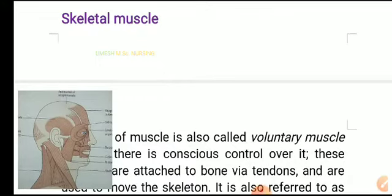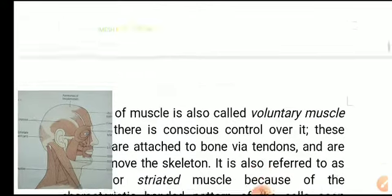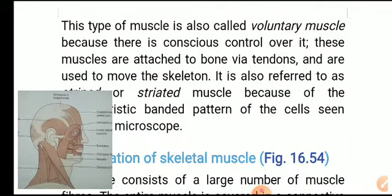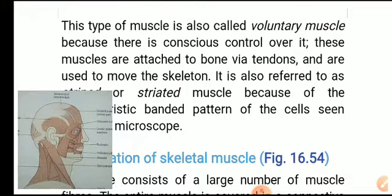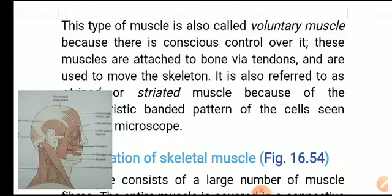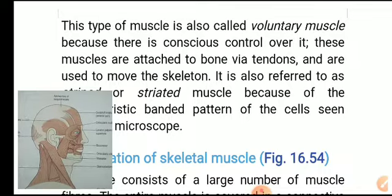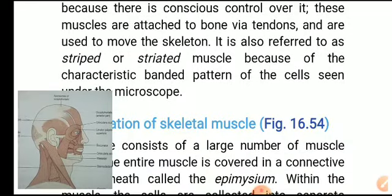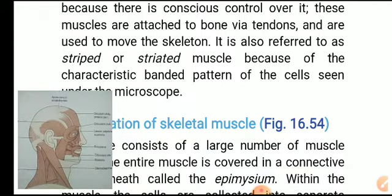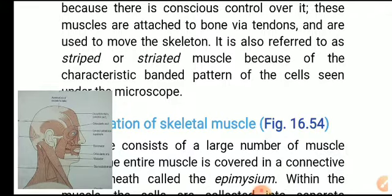Skeletal muscle is also called voluntary muscle because it is under conscious control. These muscles are attached to bone via tendons and are used to move the skeleton. It is also referred to as striped or striated muscle because of the characteristic banded pattern of cells seen under the microscope.